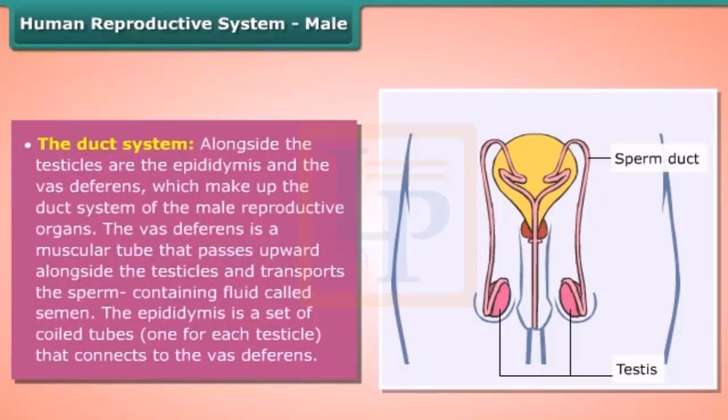The vas deferens is a muscular tube that passes upward alongside the testicles and transports the sperm-containing fluid called semen. The epididymis is a set of coiled tubes — one for each testicle — that connects to the vas deferens.